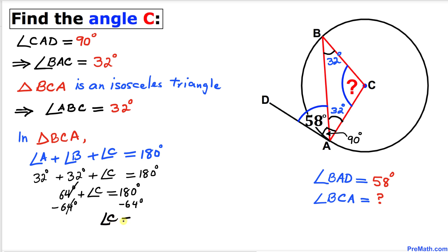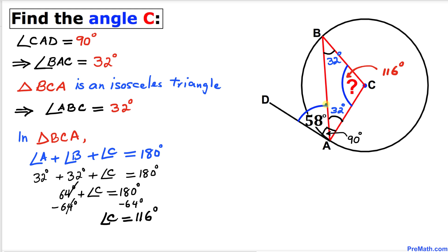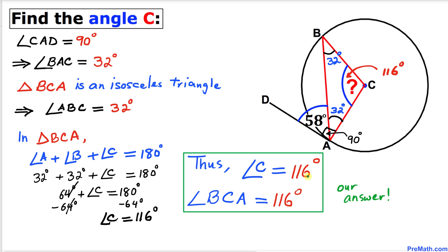Let's do one observation: we can see that this angle C is twice as much as angle BAD. Thus our angle C turns out to be 116 degrees, and angle C could also be written as angle BCA — and that's our final answer. Thanks for watching and please don't forget to subscribe to my channel for more exciting videos.